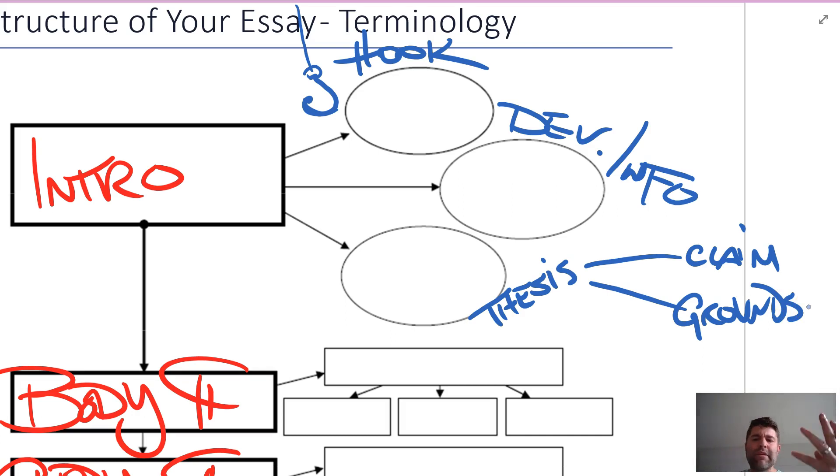And there are some artful ways that you can do this. You can have your claim stated, use a transition word like 'because,' and then go into your grounds. Or you can even try to flip those around if you're feeling more artful. But this is your basic introduction and this is where this is going.